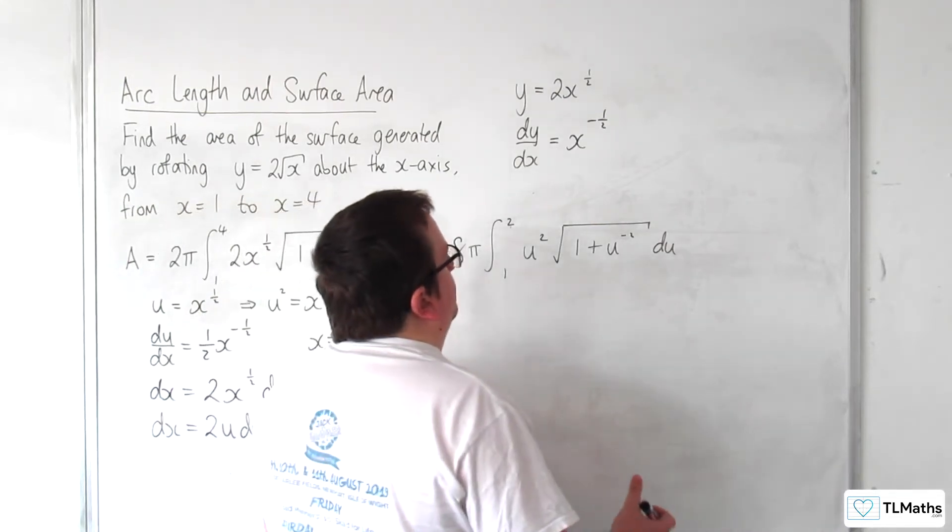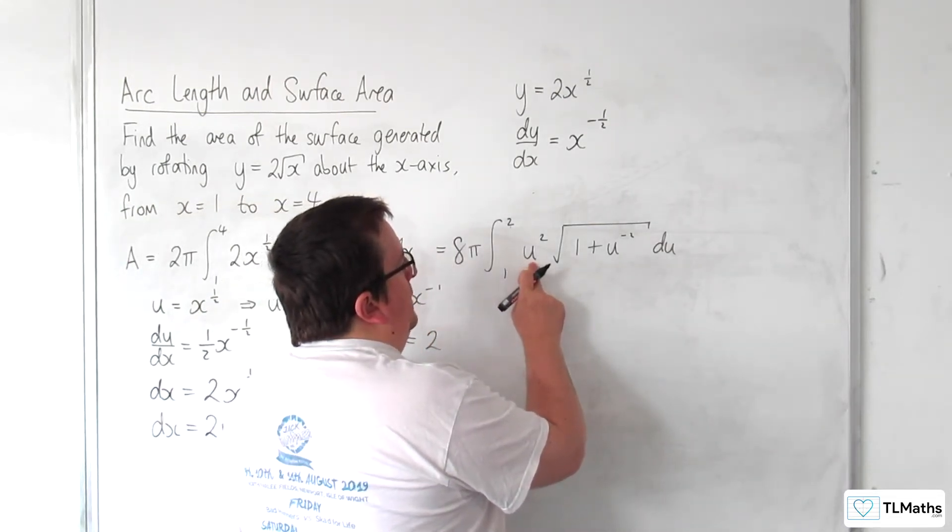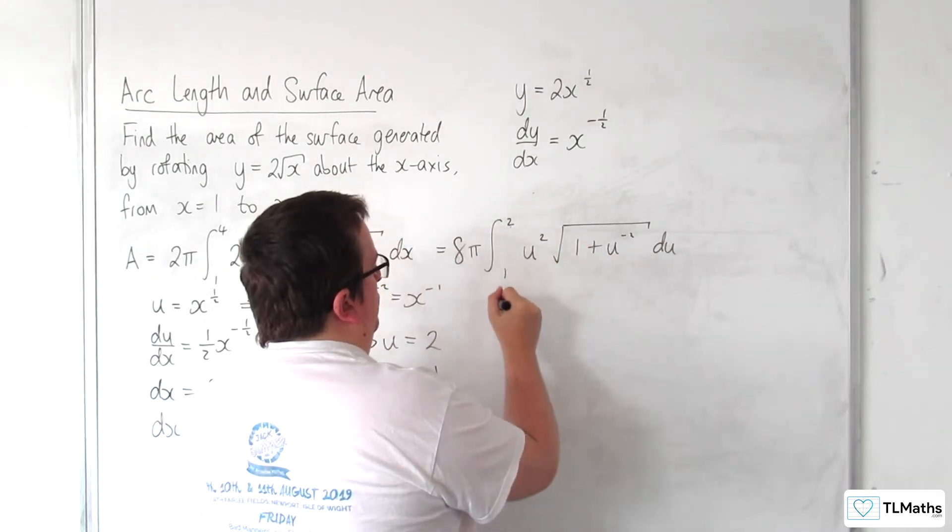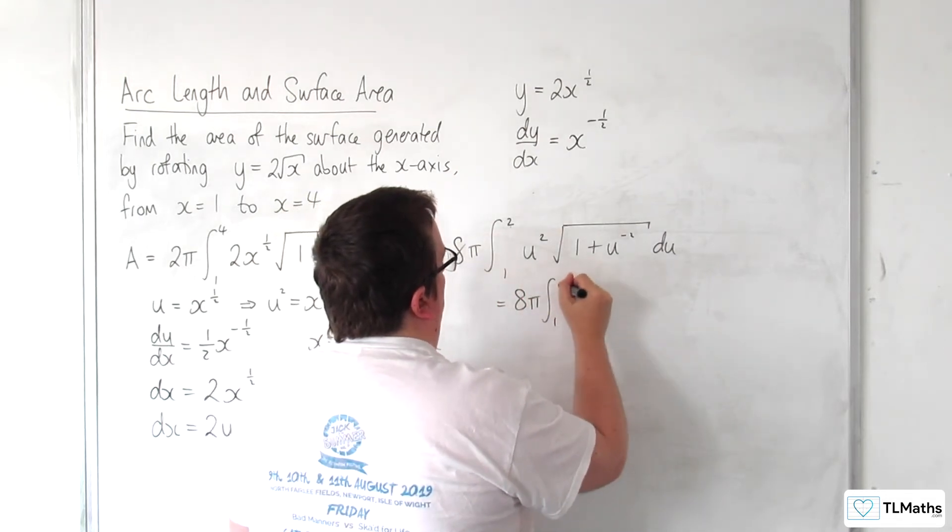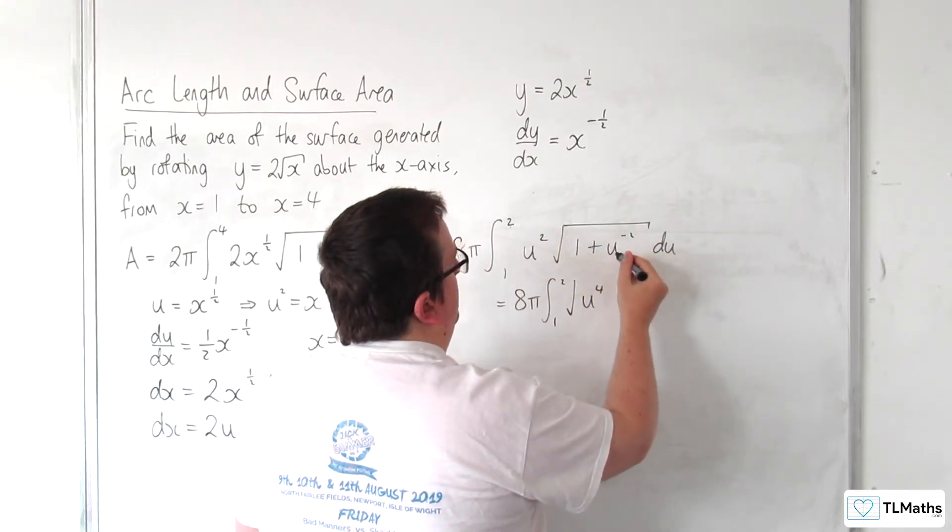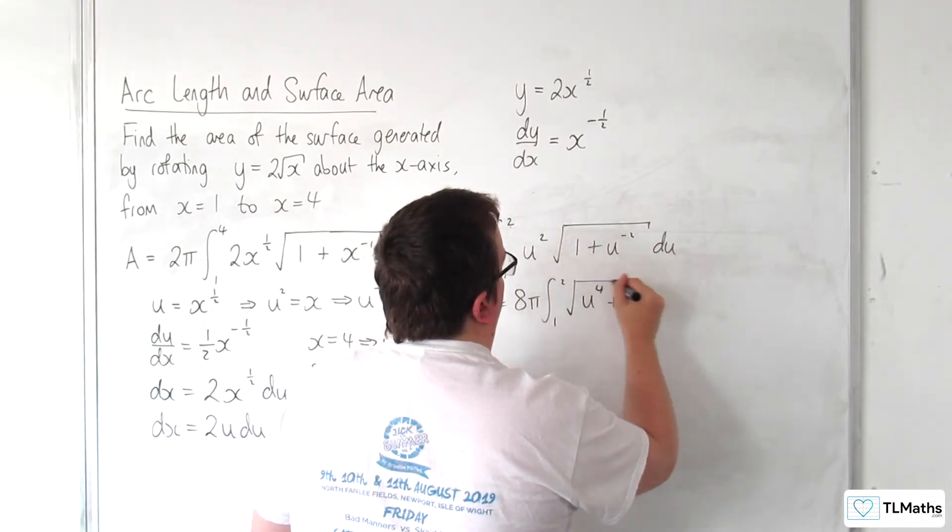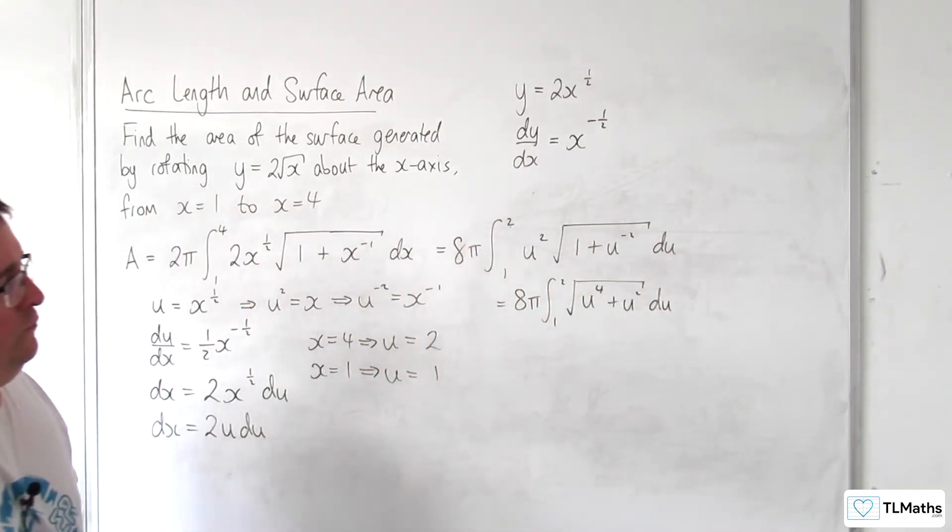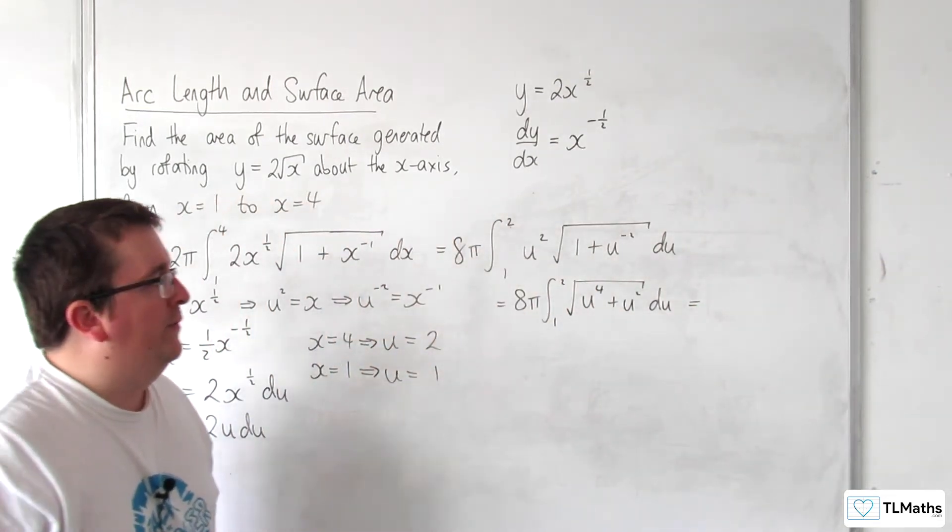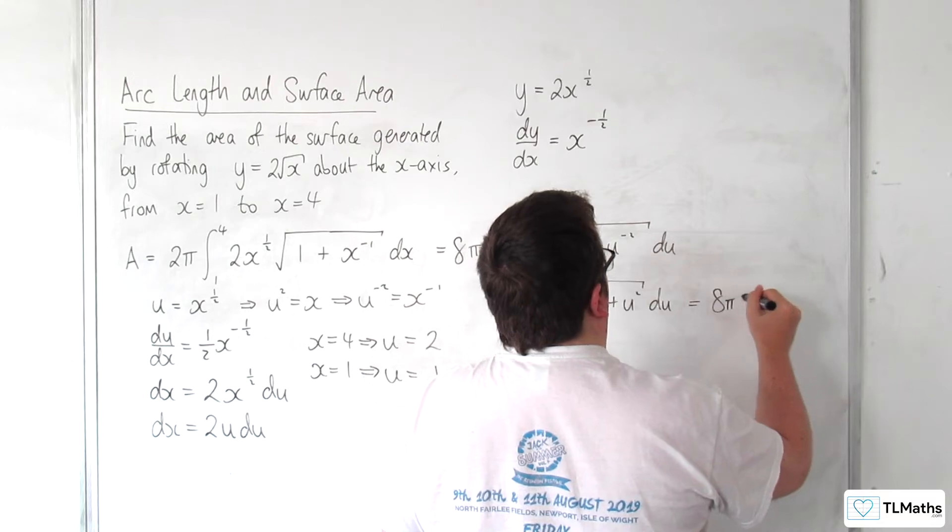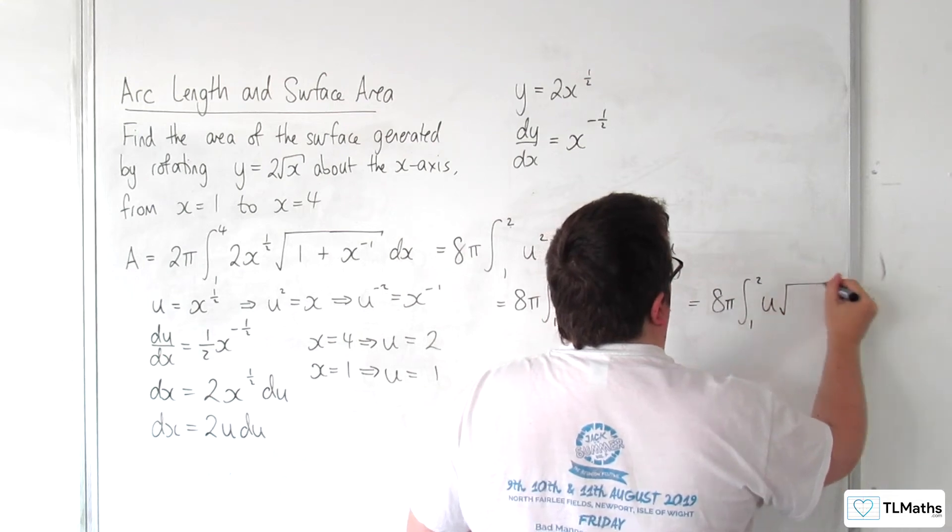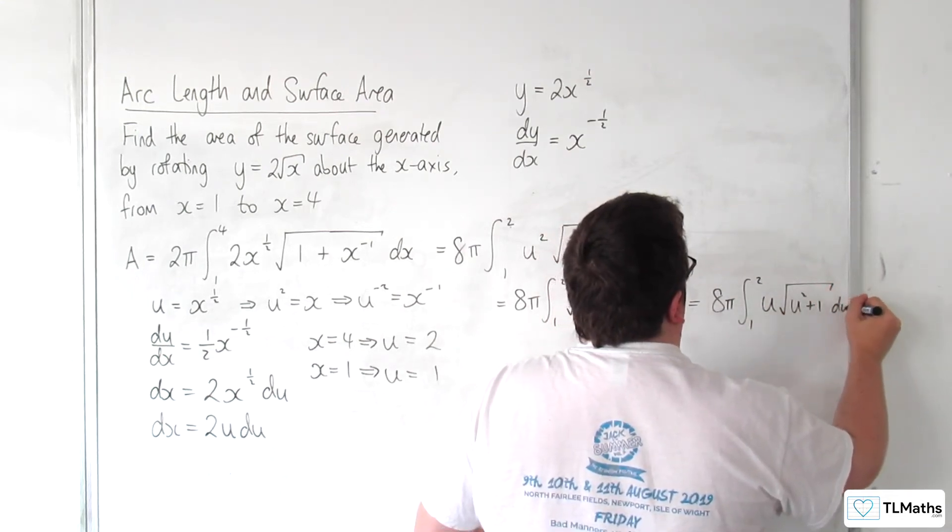In doing that, u squared is the square root of u to the 4, so multiplying through by u to the 4, I'm going to get 8 pi times the integral between 1 and 2 of u to the 4 plus u to the 4 times u to the minus 2 is u squared du. And then I can factor out u squared from inside the square root, so I'll have 8 pi times the integral between 1 and 2 of, well, the square root of u squared is just u, u squared plus 1 du.